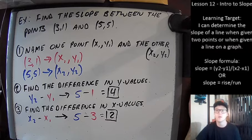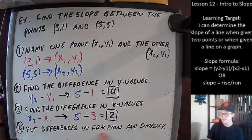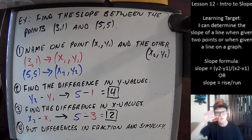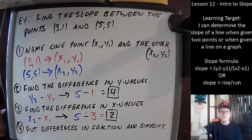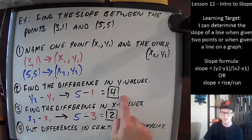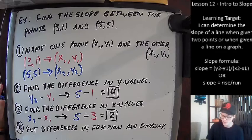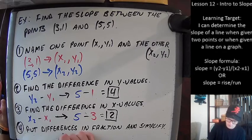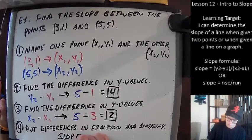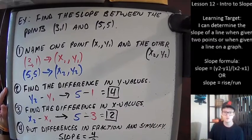Our fourth and final step: we're going to put the differences in our fraction and then simplify. Remember when we wrote down 'change in y over change in x'? Here it is. The change in the y values is four for this problem and the change in the x values is two, so we're going to put them in that form — the slope equals four over two.